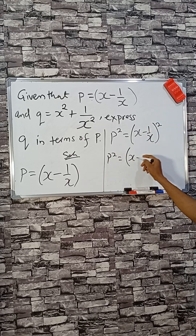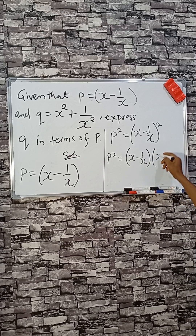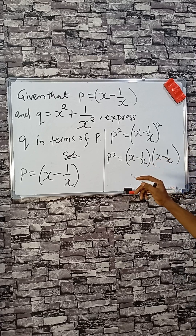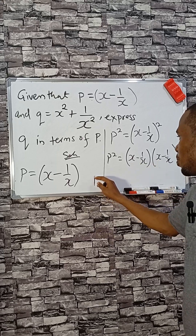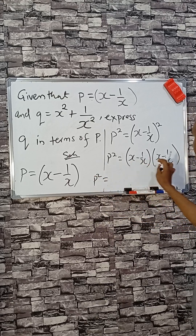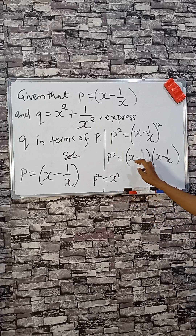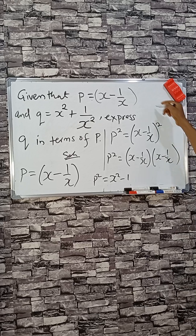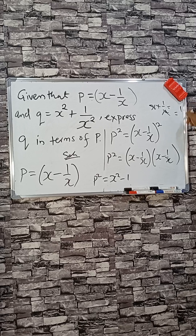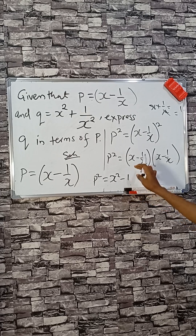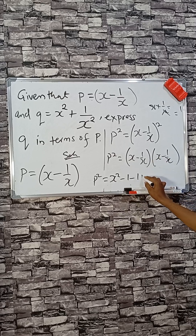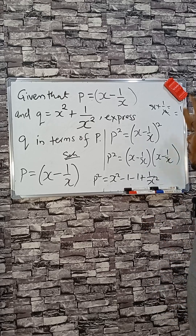We have this bracket appearing in two places when expanding. So x times x gives x squared. Then x times one over x gives minus one, because of the minus sign. And minus one over x times x also gives minus one.